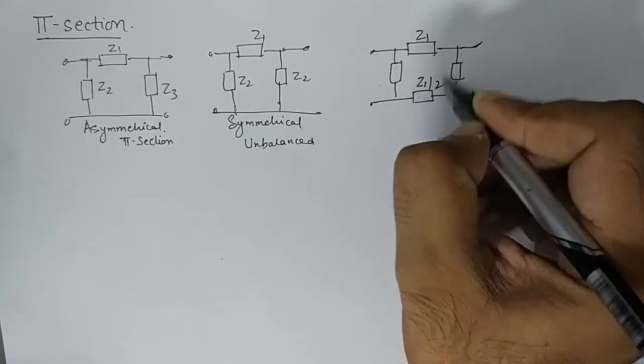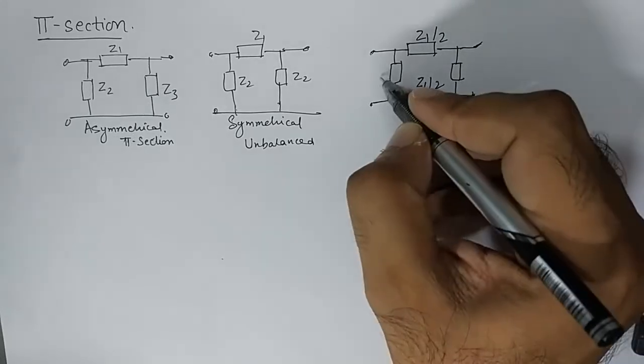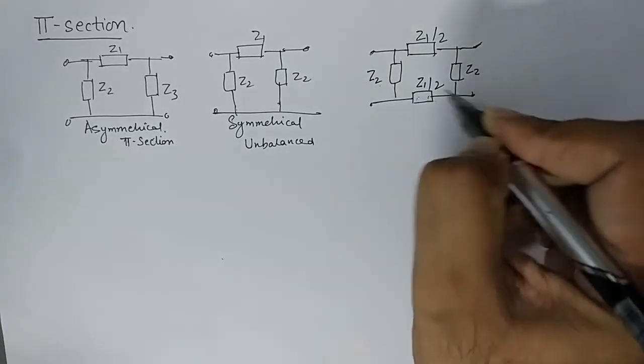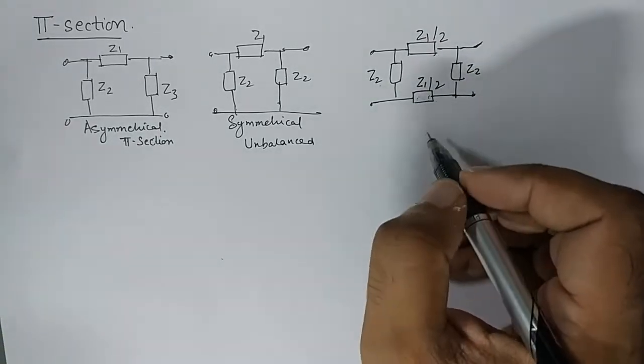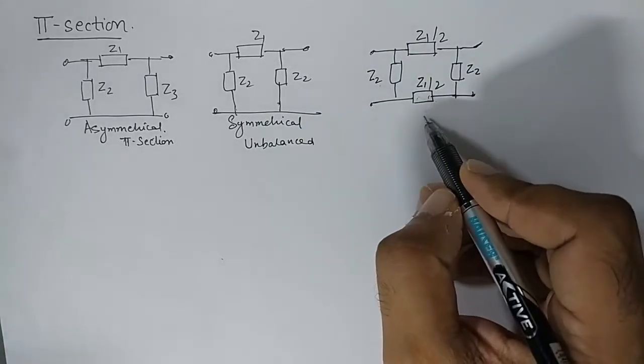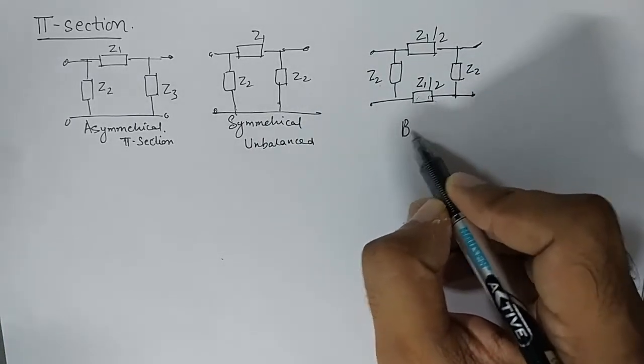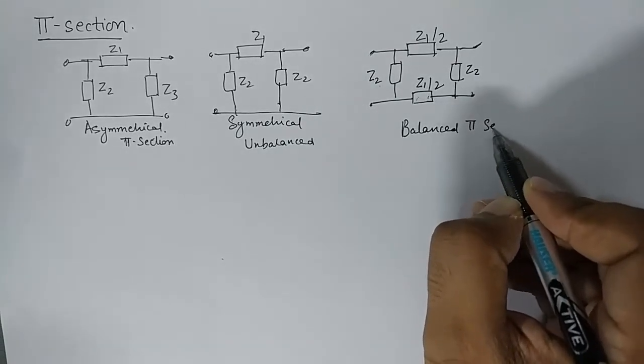Now please understand when we add another impedance in the other serial arm, then the total impedance needs to become Z1. That is balanced. So this is balanced π-section.